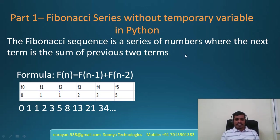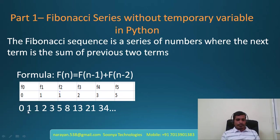What is Fibonacci sequence? Fibonacci sequence is a series of numbers where the next term is the sum of the previous two terms. The formula to calculate Fibonacci series is f(n) = f(n-1) + f(n-2). For example, if you want to find Fibonacci of 5, f(5) = f(4) + f(3). From the table, f(3) = 2 and f(4) = 3, so f(5) = 2 + 3 = 5.